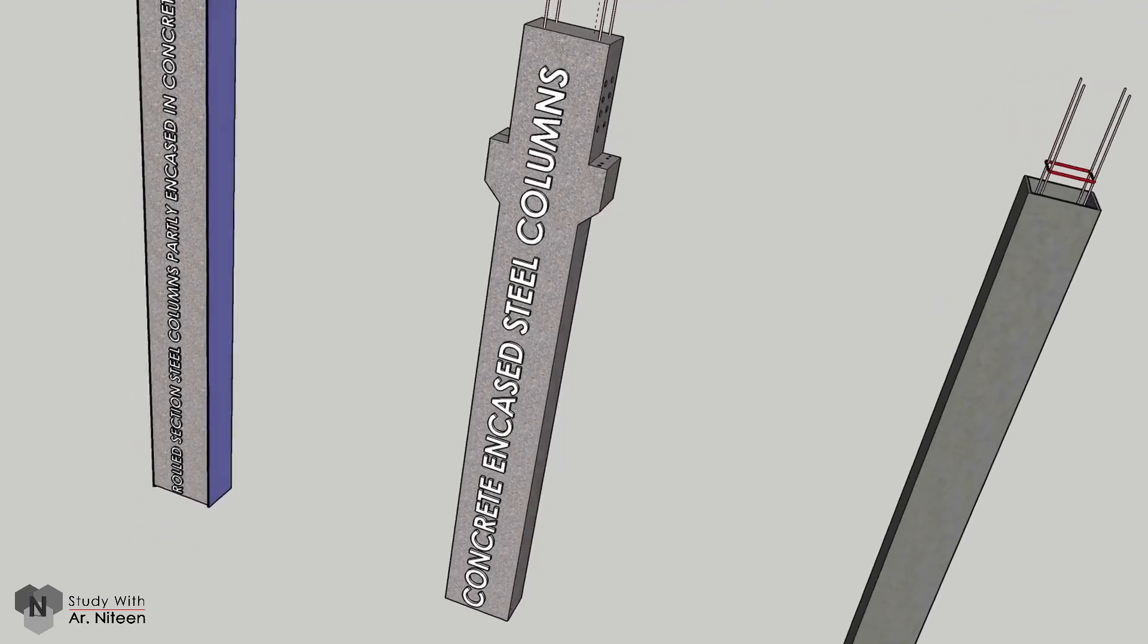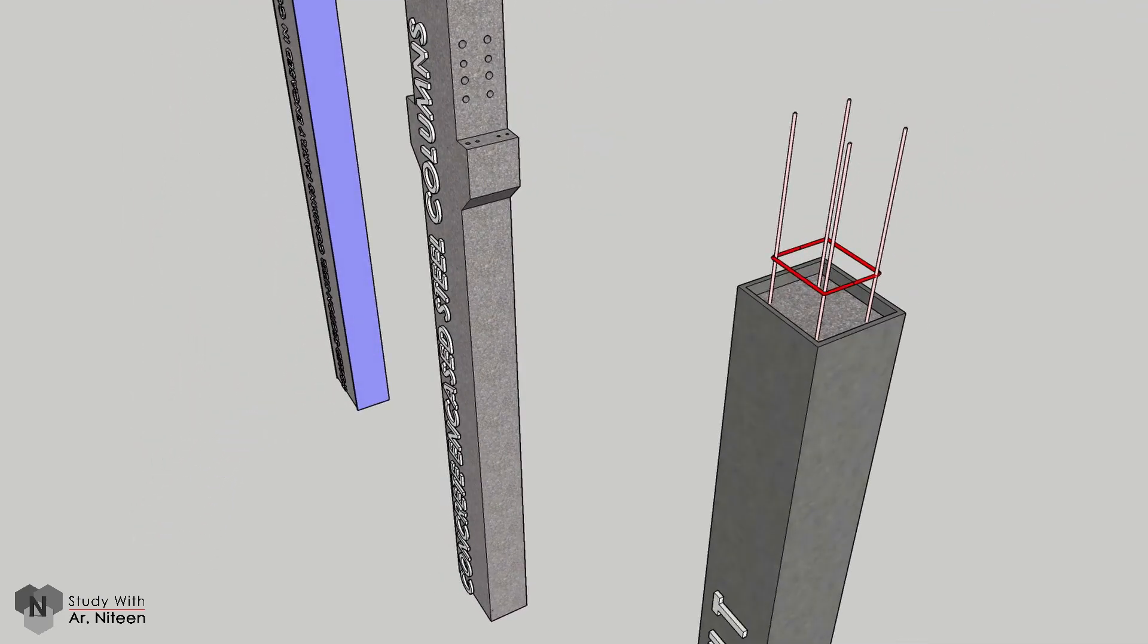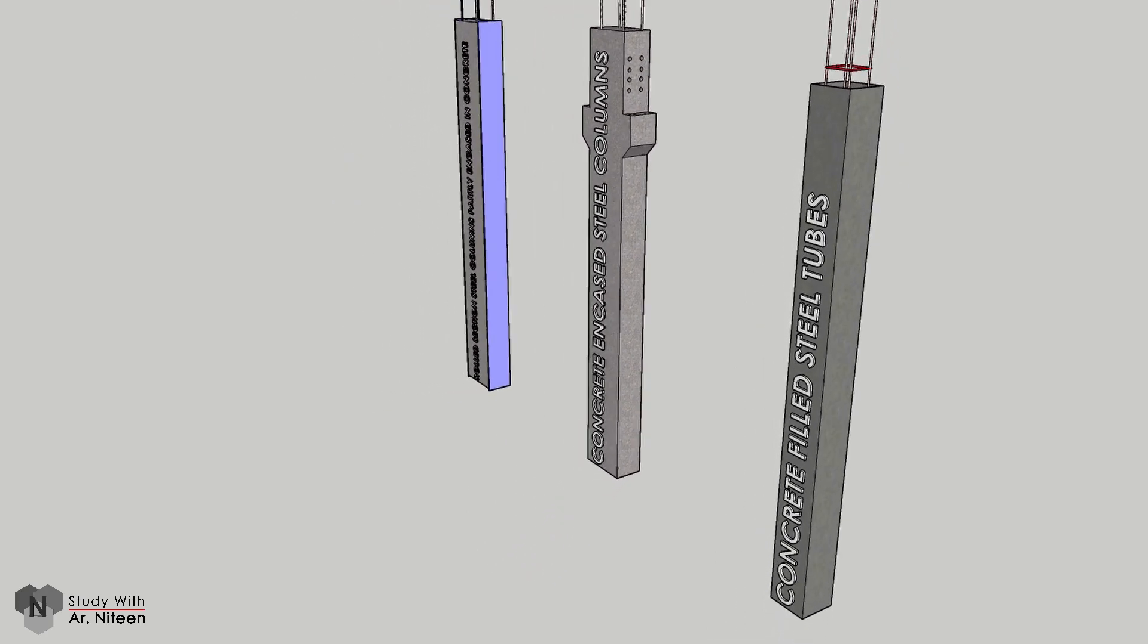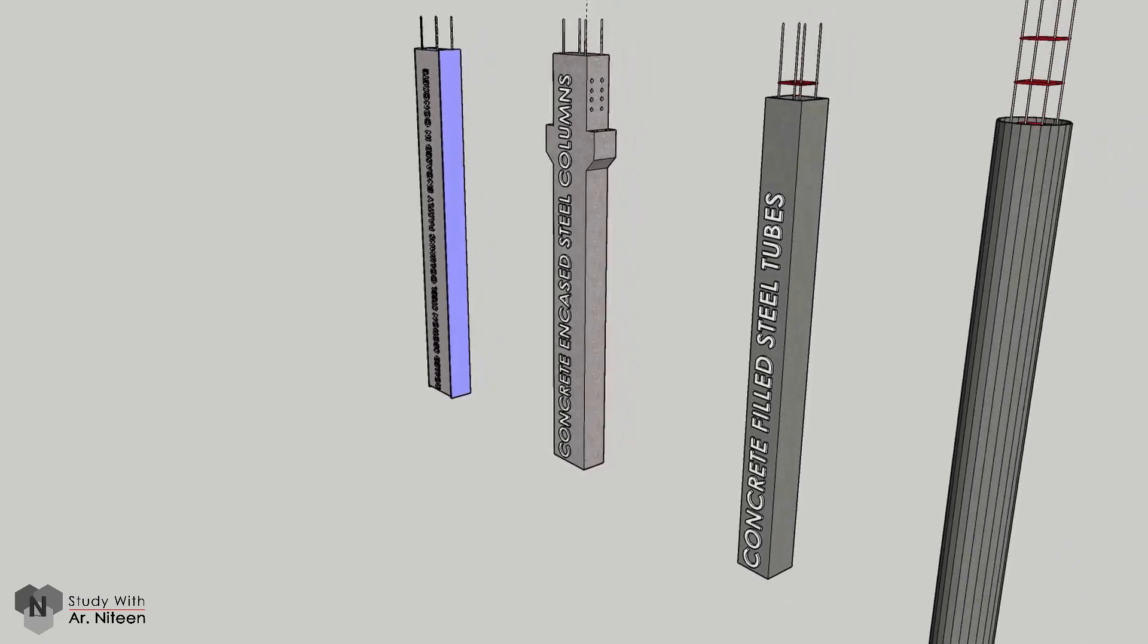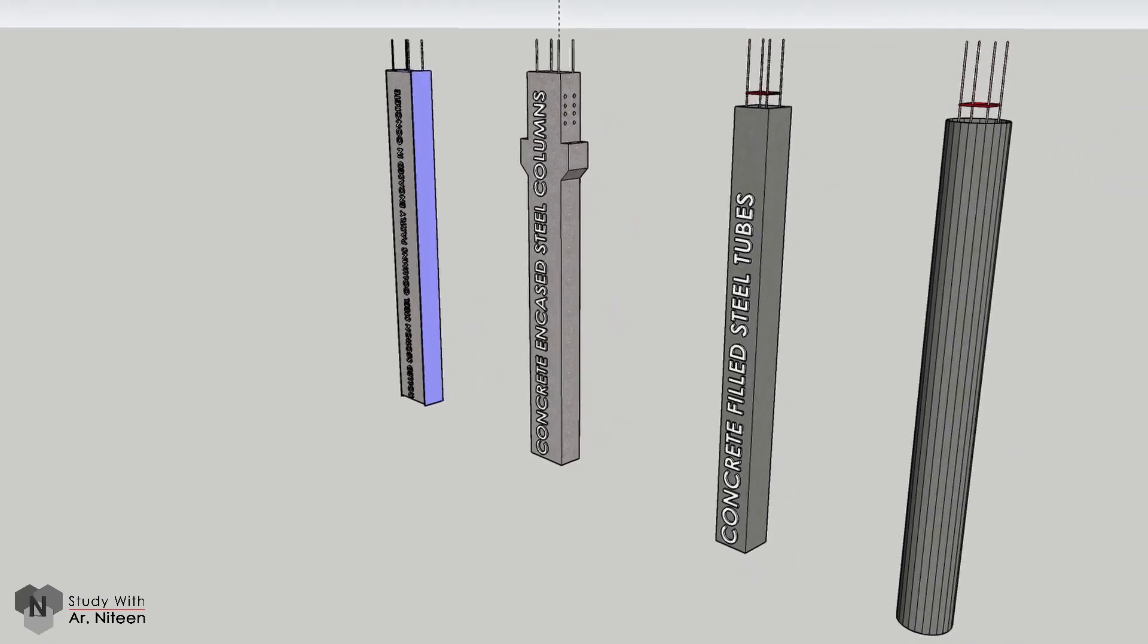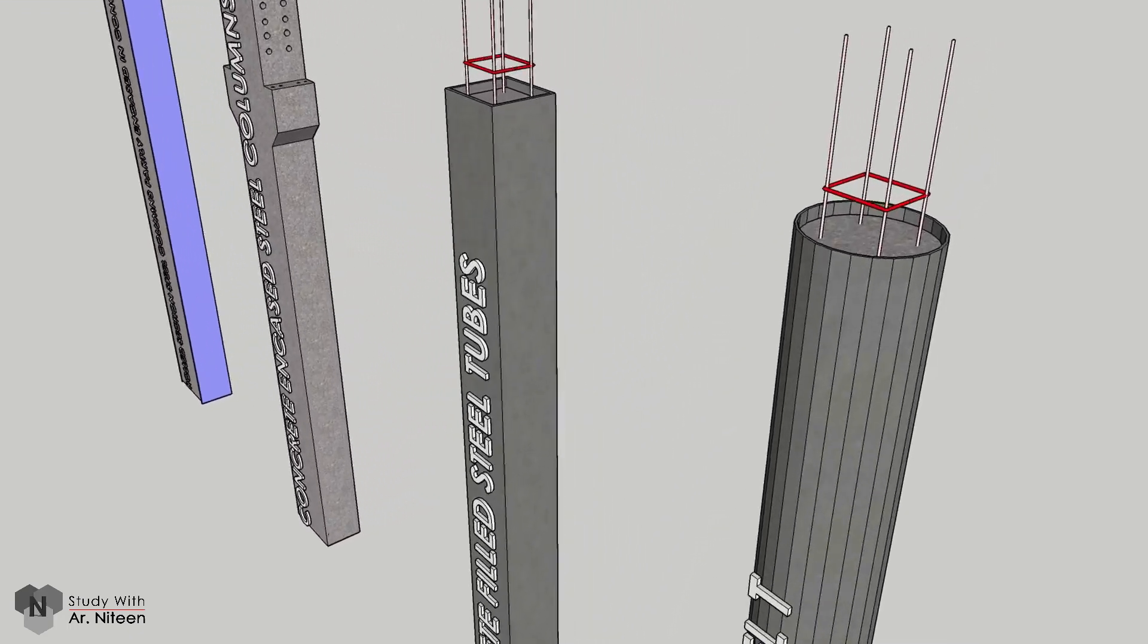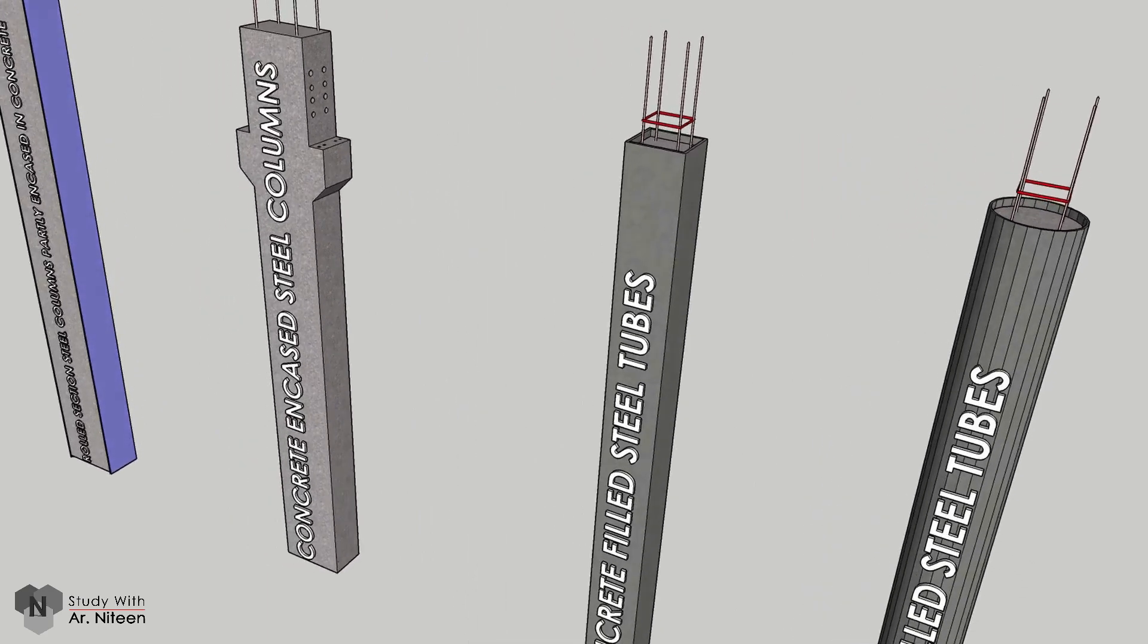Concrete encased columns have the advantage that they meet fire resistance requirements without any other protection. In addition, they can be easily strengthened by reinforcing bars in the concrete cover. These steel columns, the longest have been up to 30 meters long, can then be transported to another workshop where concreting takes place. After the concrete encasement has cured, the completed columns can be brought to the construction site.